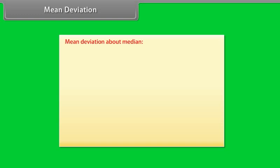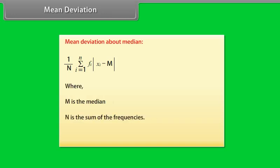Mean deviation about median: First we find the median. Then we find the mean of the absolute values of the deviations from the median. The mean deviation = summation from i=1 to N of (Fᵢ × |Xᵢ − M|) divided by N, where M is the median, N is the sum of the frequencies.